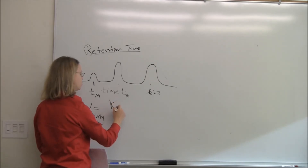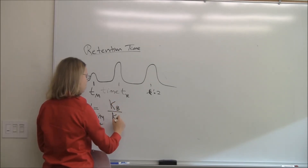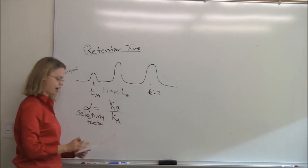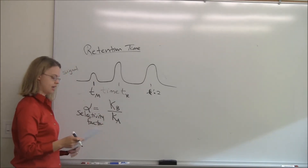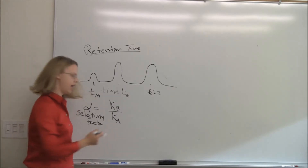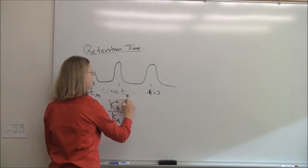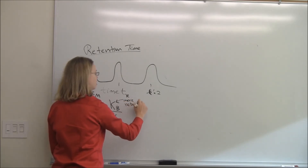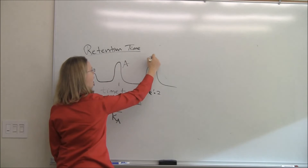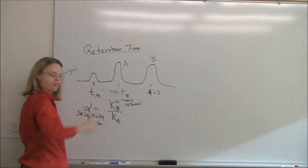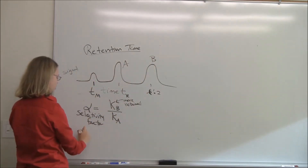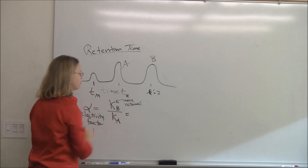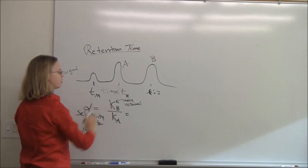Alpha is just big K — the equilibrium coefficient for analyte B — over the big K for A. Alpha is always defined so that B is the more retained analyte. In a diagram, A would come out first and B would come out later. So B is always further down the line, which means alpha is always greater than 1. That's how we know which is A and which is B.